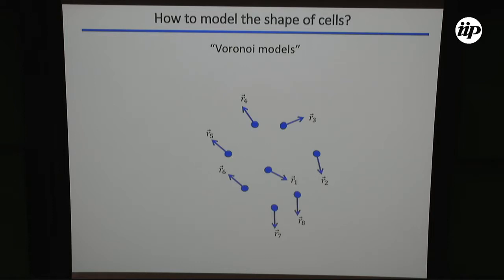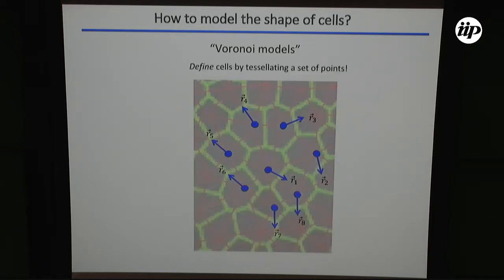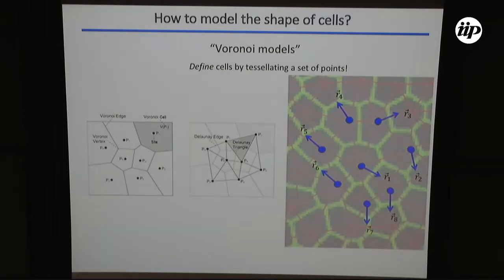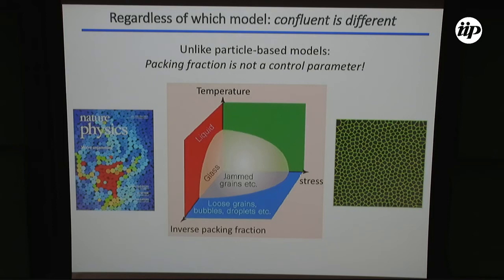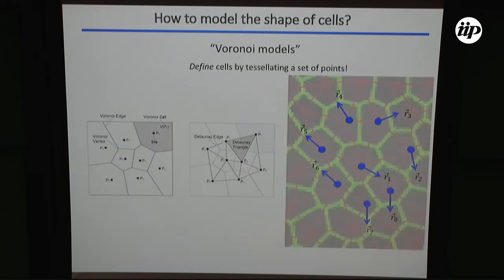In the Voronoi model, the degrees of freedom are just individual cell positions, and the shape of the cells comes from taking a Voronoi tessellation of the space around each point. This handles topological transitions automatically and also makes generalizing to arbitrary dimension really quite easy. For the purpose of this talk, the distinction between these different sorts of models of dense tissue is really not so critical.